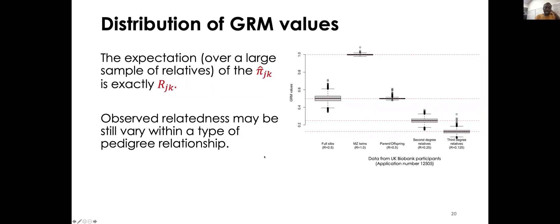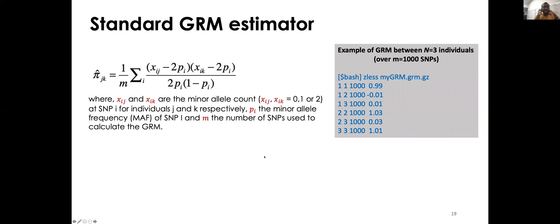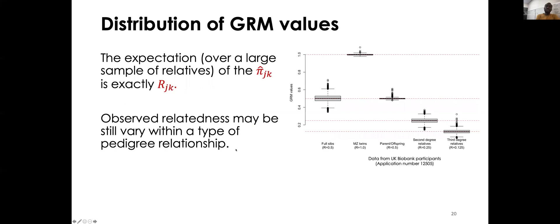So one thing that we can observe is that in that matrix, we have relatedness that can be a bit larger than one for people with themselves, and we can also have negative values, right? So this is an observation and that's because this is an estimator, but we can say something about the distribution of that estimator.